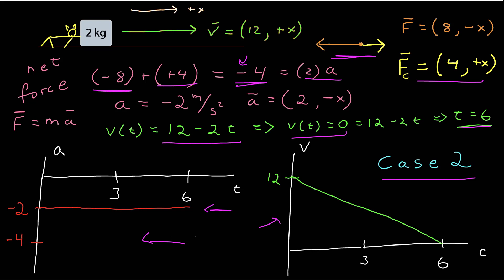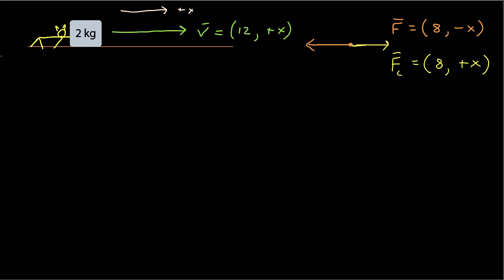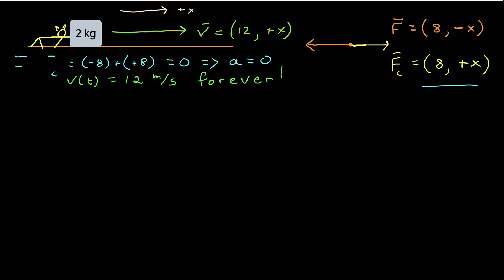But still, the force leads to acceleration, which leads to the change in velocity. Now for the final case — you probably saw this coming. The book is sliding across the floor, but this time the cat is really aggressive, giving it a contact force of 8 newtons in the positive x direction, which equals the force of friction. The net force is negative 8 plus positive 8, which equals 0. If the net force is 0, then the acceleration is 0, and the velocity as a function of time doesn't change — it stays at 12 meters per second forever, or at least until it hits the wall.